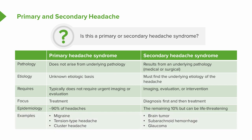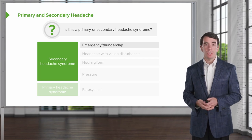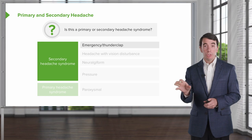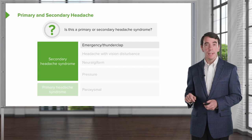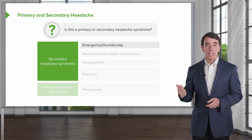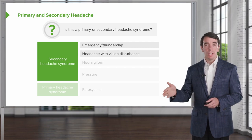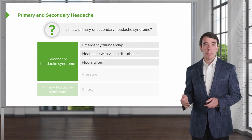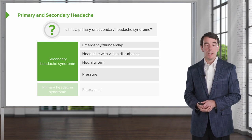Examples of primary headache syndromes include migraine, tension type, and cluster headache. Examples of secondary headaches include brain tumor, subarachnoid hemorrhage, and glaucoma. When asking questions to a patient or reviewing a clinical vignette, we start with questions to look for secondary causes of headache — the emergent or thunderclap causes, headaches with vision disturbances, neuralgia-form headaches, and high and low pressure headaches, all of which often have a secondary cause that must be explored.